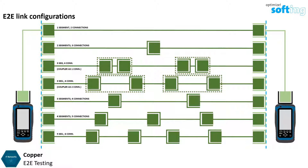For example, if 2 connections are closer than 10cm apart, they count as 1 connection. If 2 connections are more than 10cm apart, they count as 2 connections. In some configurations, segments can consist of a jack, cable and a socket, which is similar to a consolidation point. In some configurations, segments can consist of 2 sockets and a cable, which is similar to a permanent link.